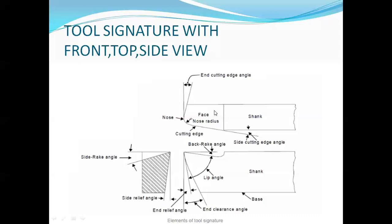This is a top view. The face or rake surface is visible here. The end cutting edge angle — its value may be between 3 degrees to 15 degrees. This angle is produced by the end cutting edge and the line perpendicular drawn from the cutting point when the top view is taken.